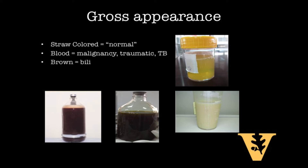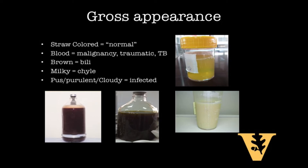Blood can also be traumatic, which may be from our procedure itself. Be sure to keep that in mind and consider ordering a hematocrit level of the ascites to see if frank bleeding is occurring. Brownish to greenish color is suggestive of bilirubin and possible biliary obstruction. Milky appearance should raise our antenna for lipids or chyle. And finally, the ascitic fluid may simply be purulent, which would imply an infection.